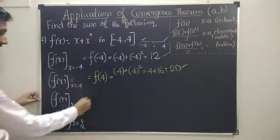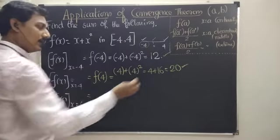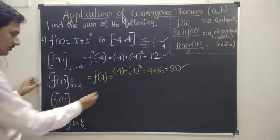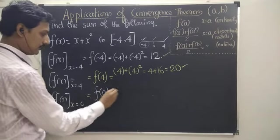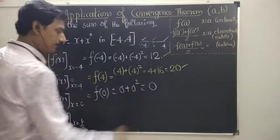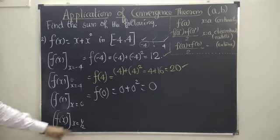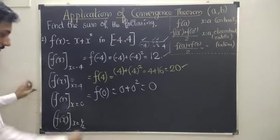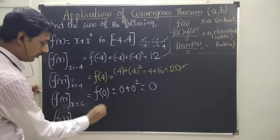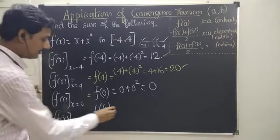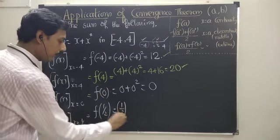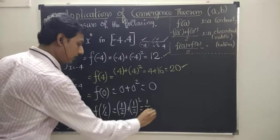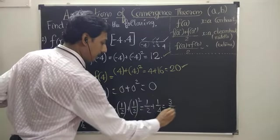The third case: x equal to 0, which is also inside the interval — it is in the safer zone. So this is a point of continuity. Therefore f of 0 equals 0 plus 0 squared equals 0. For x equal to 1/2, which is also inside the interval: f of 1/2 equals 1/2 plus (1/2) squared equals 1/2 plus 1/4 equals 3/4.